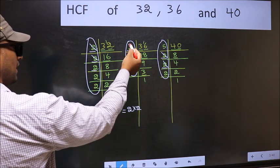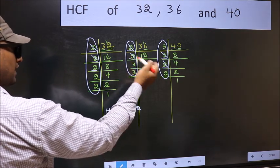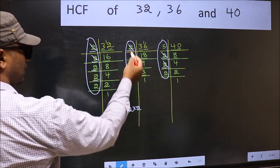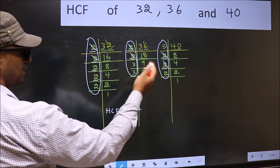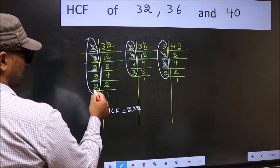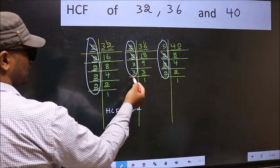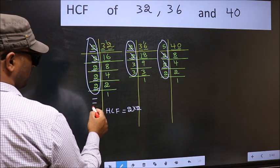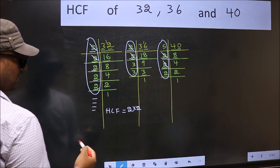Next number 2. Do we have 2 here? No. So no need to check in the other place. Next number 2. Do we have 2 here? No. No need to check in the other place. Next number 2. Do we have 2 here? No. No need to check in the other place. No more numbers have been left out.